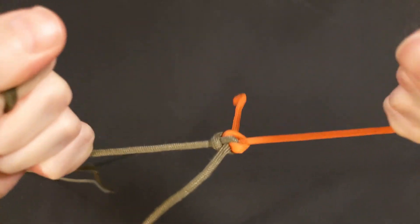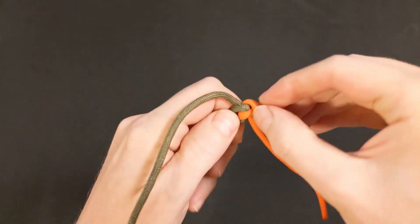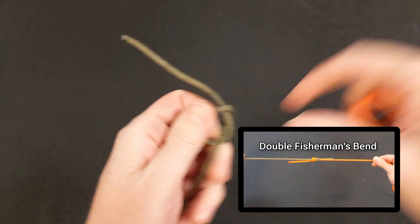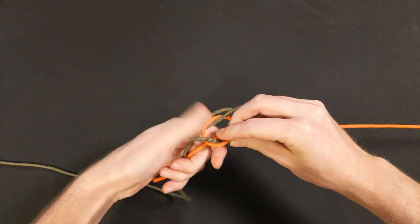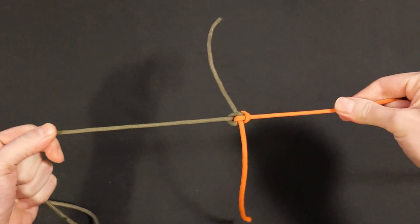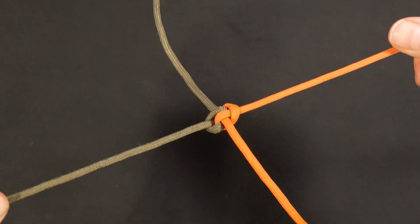But the kicker is the ease with which you can untie the Zeppelin bend, whereas the double fisherman's bend is virtually impossible to untie if it's heavily loaded. Yet for whatever reason, the Zeppelin bend is just not as popular as some of its other bend counterparts. But maybe that will change.